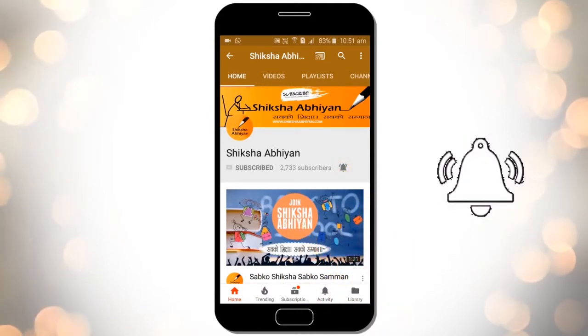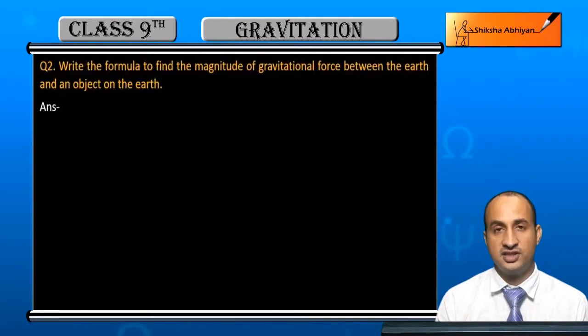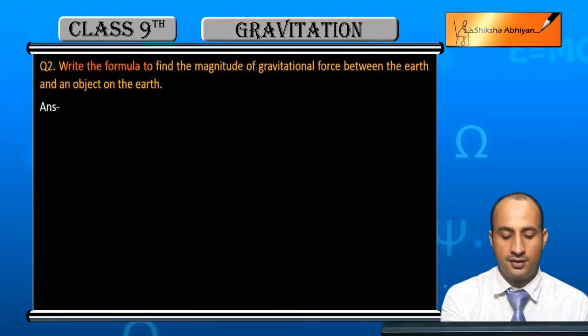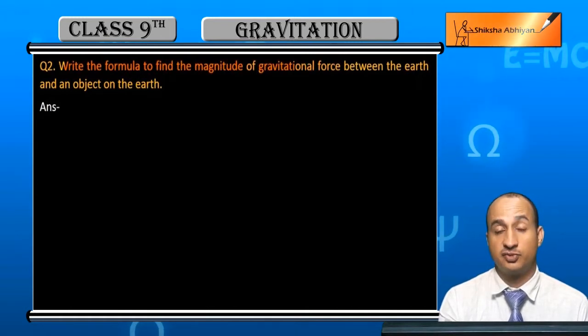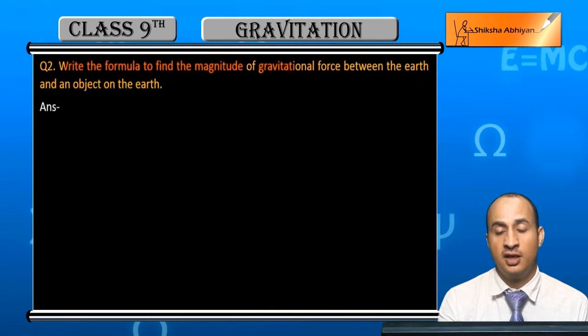Now see the second question. The question is: write the formula to find the magnitude of gravitational force between the earth and an object on the earth.